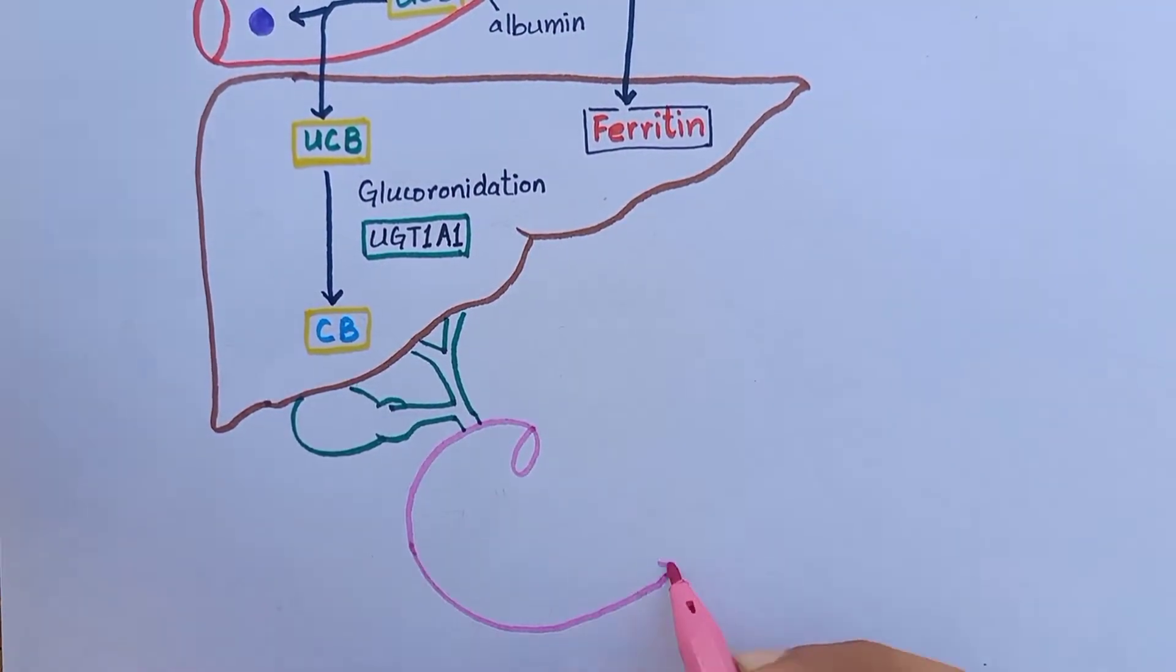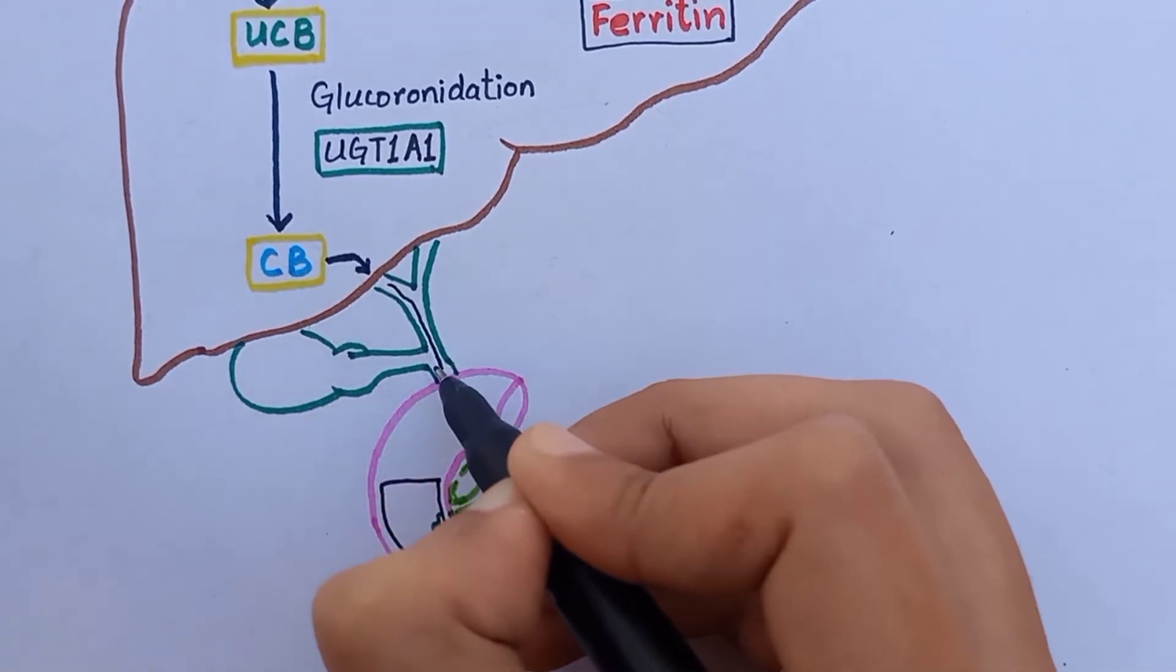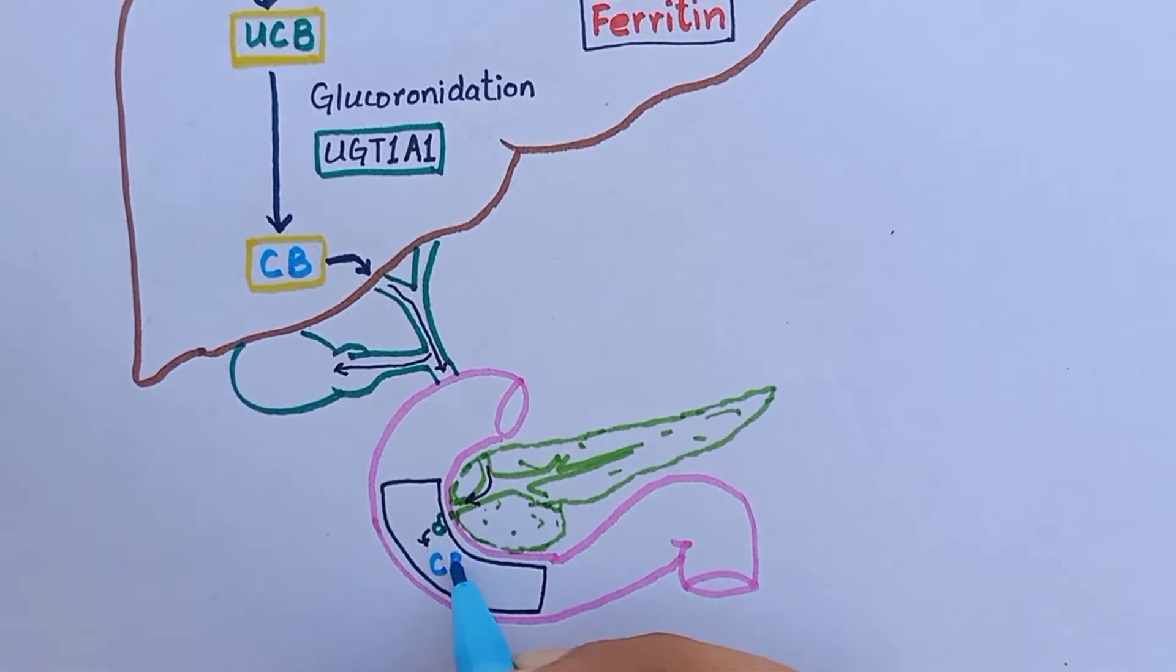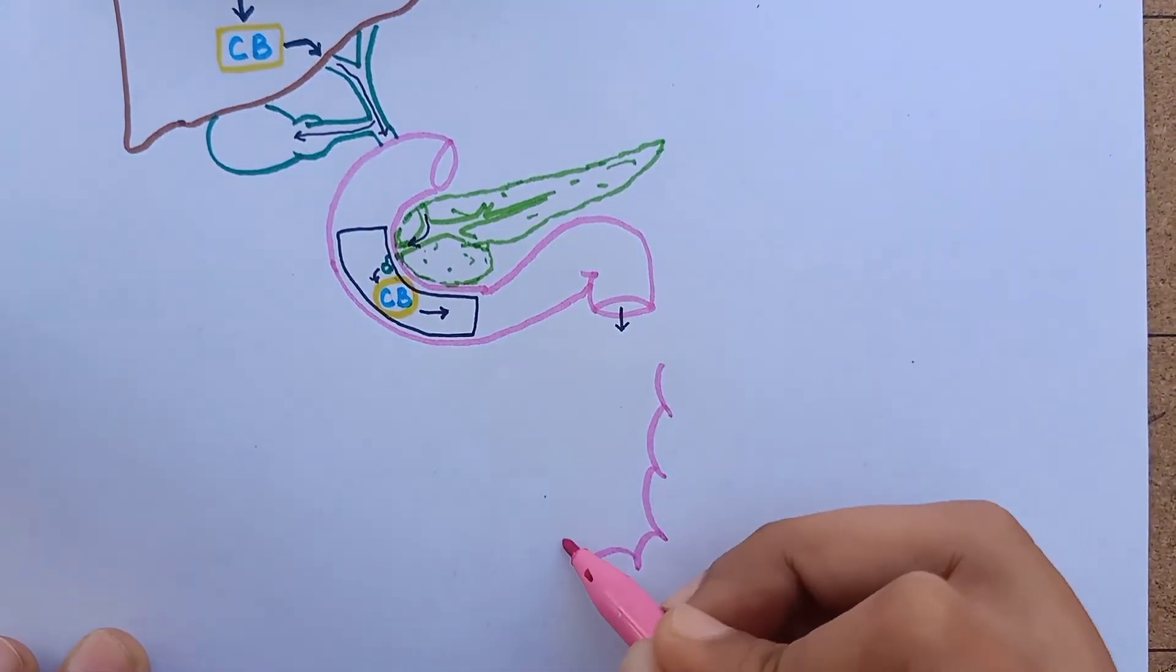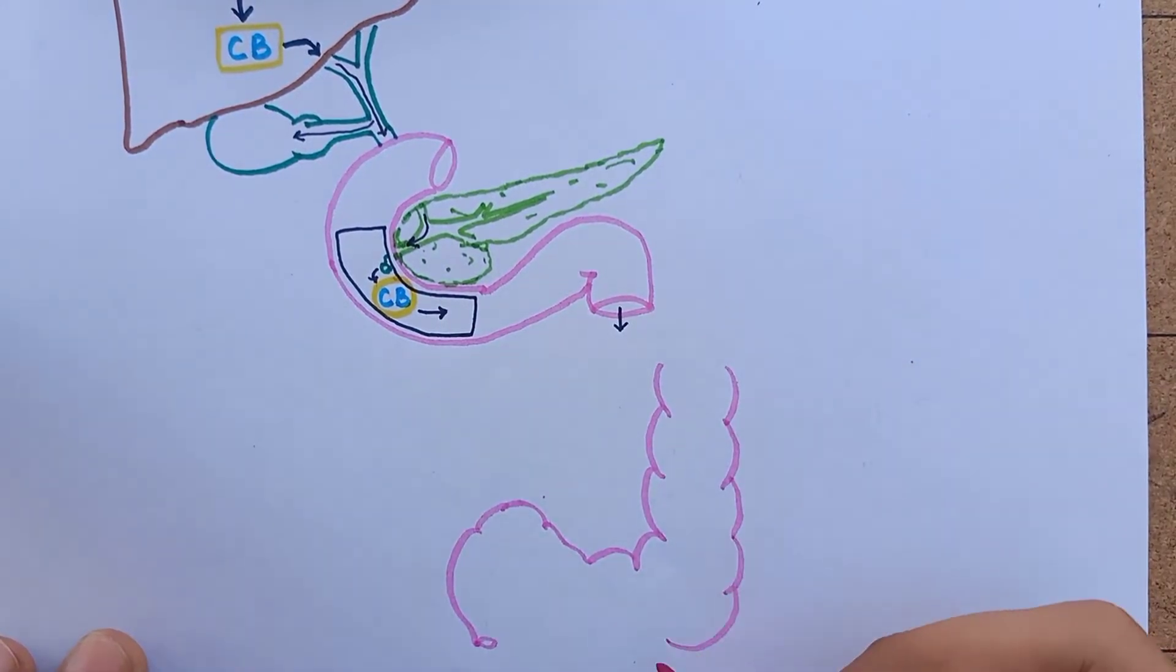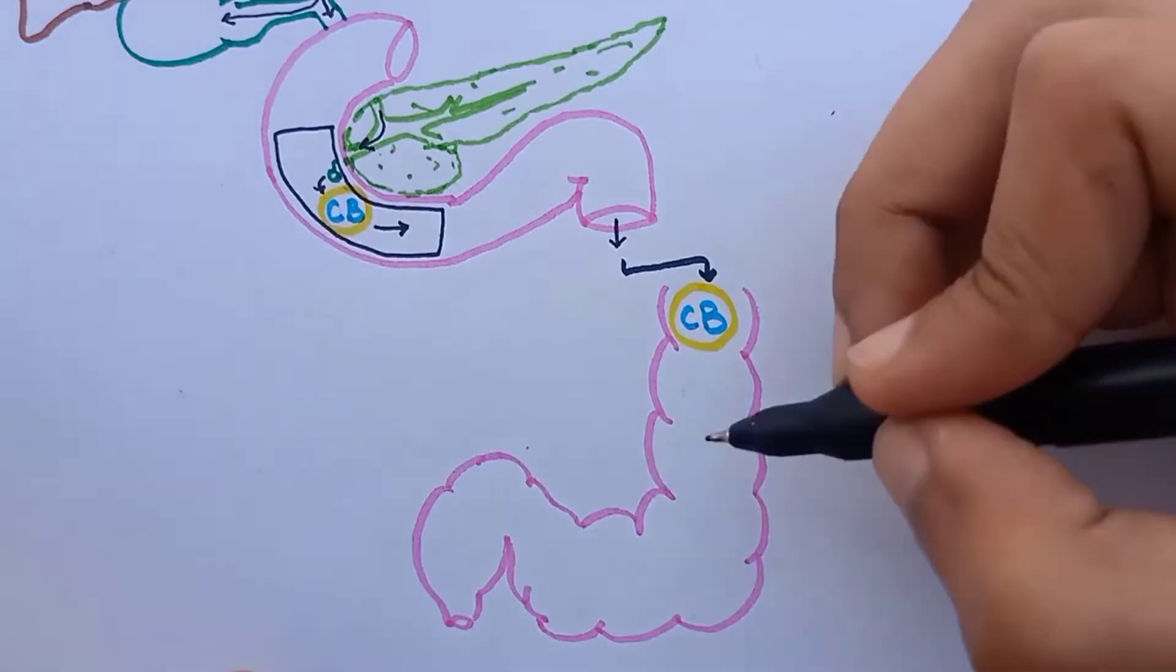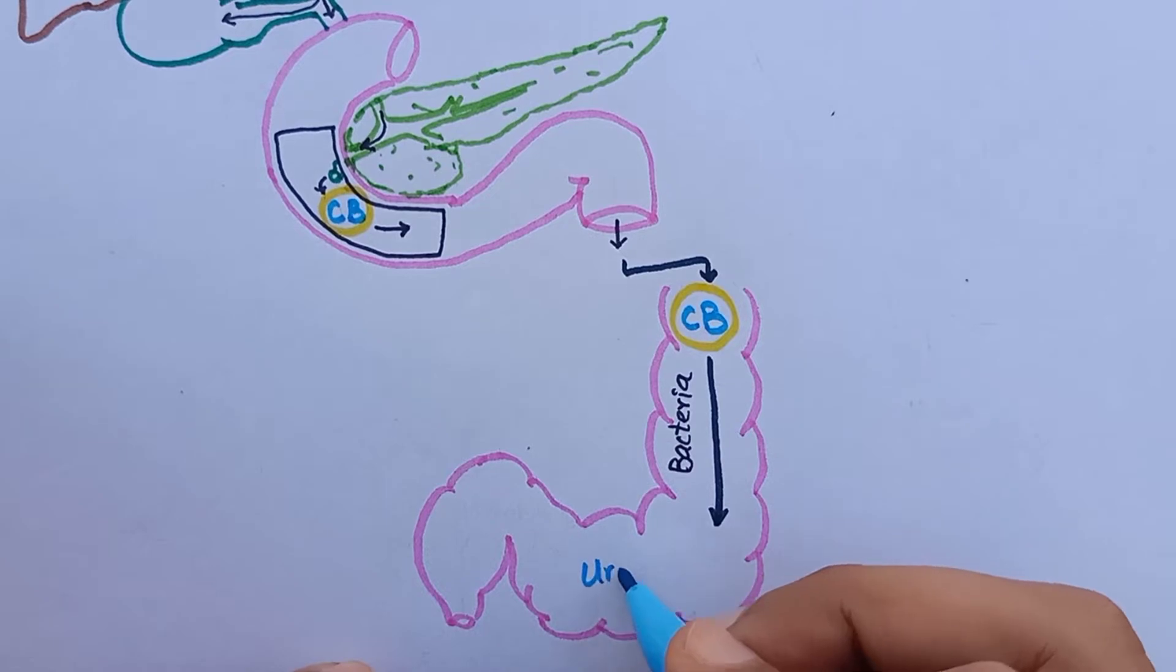It is secreted into the intestines via biliary system. The conjugated bilirubin travels down the bile duct where it enters the duodenum through ampulla of Vater. In the last part of small intestine and in the colon, conjugated bilirubin is exposed to bacteria and the bacterial enzymes convert it into a substance called urobilinogen which is highly soluble.